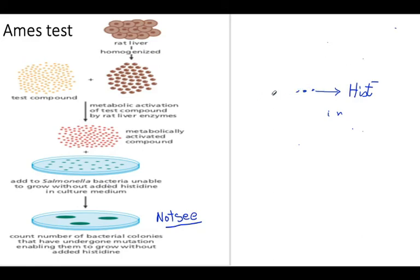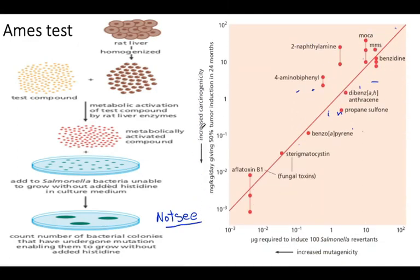Compounds can be classified as more carcinogenic, highly mutagenic, or less mutagenic, with less mutagenic compounds representing lower risk. For example, the amount in micrograms required to induce 100 Salmonella revertants can be measured. Looking at compounds like MOCA or benzene, you examine the microgram amounts needed. With aflatoxins — found in peanut butter — even a very minute amount has a high carcinogenic potential for liver cancer; milligrams per kilogram per day can give 50% tumor induction in 24 months. As carcinogenic potential increases, mutagenic potential increases proportionally.